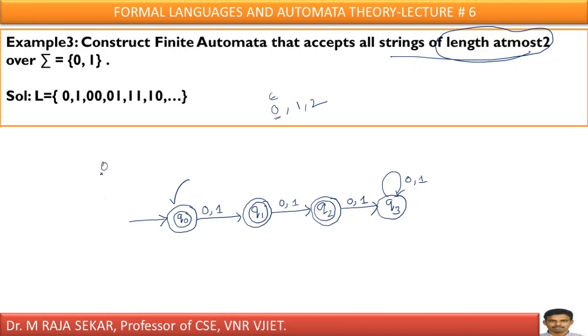1 length string means what? 0 is a string whose length is 1. 1 is also a string whose length is 1. If I keep 0, I will go to q1. Again, it's a final state. If I keep 1, I will go to q1.